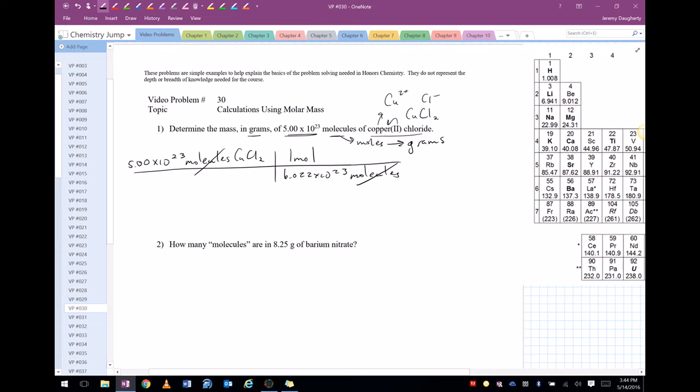So molecules cancel out, so I end up with moles of CuCl2. Let's go ahead and get what that is. So that's 5e to the 23rd divided by 6.022e to the 23rd. And I get a value of 0.830, now don't round it, leave that number in your calculator, but that's moles now of CuCl2.